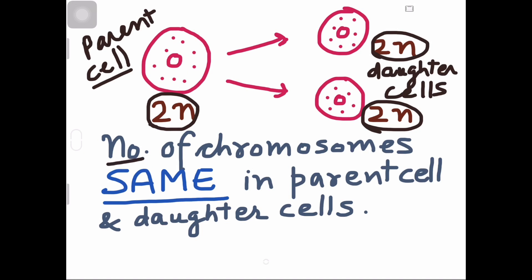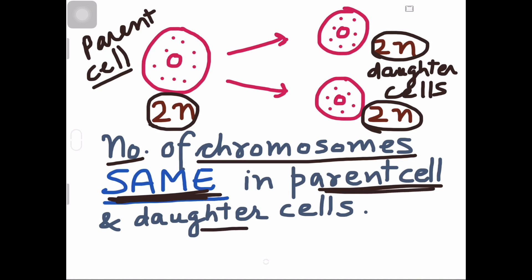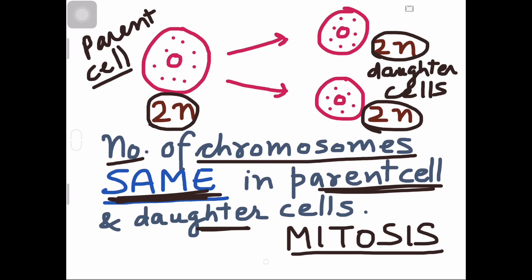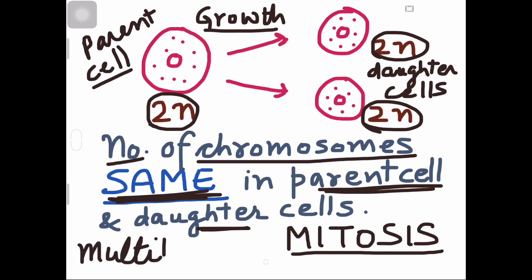The number of chromosomes remains the same in the parent cell as well as in the daughter cells. This is the characteristic feature of mitosis division. That is why mitosis is very helpful in growth because one cell gives rise to 2, 2 to 4, 4 to 8 — and that is how cell growth and multiplication takes place. Hence mitosis is also called multiplication division or equational division.